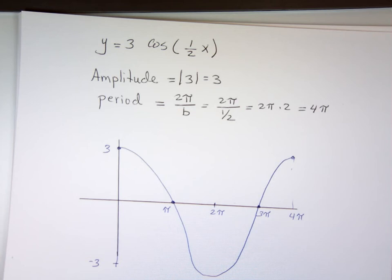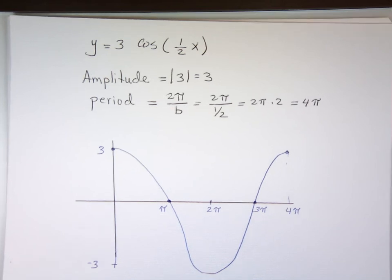So again, if I was to graph this on a graphing calculator, I need to make sure the x minimum is 0, the x maximum is set up at 4 pi. Otherwise, you're not going to see it. I need to make sure the y minimum is negative 3, the y maximum is plus 3.